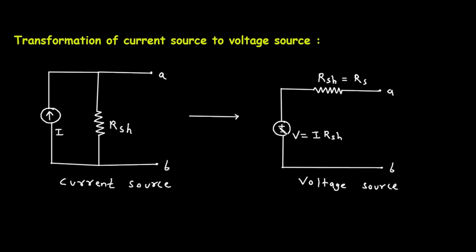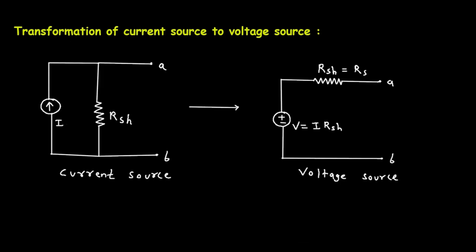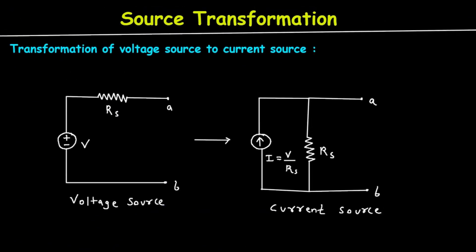What will be the value of this voltage source? Again, we can calculate it using Ohm's law: V = I × RSH. We take the value of current from the current source and the resistance value from RSH. This is how we can transform a current source to a voltage source, and this is called the source transformation technique.